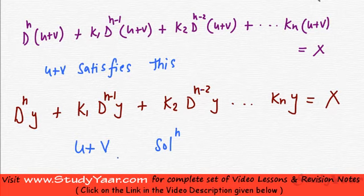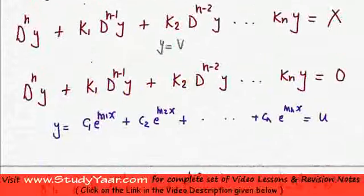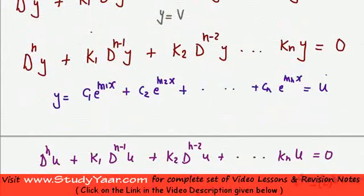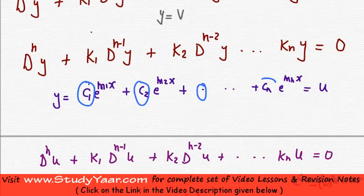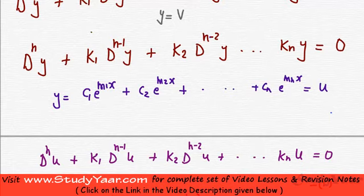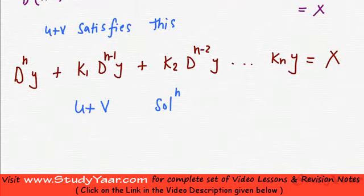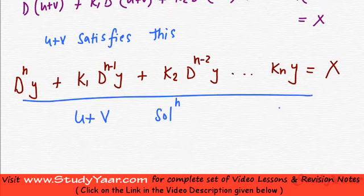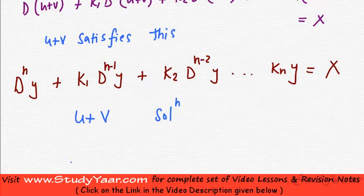Is it a complete solution? It is a complete solution because it is a differential equation of order n and it must have n constants, and u already has n constants. Therefore, the complete solution for a differential equation of this type is u plus v, where u is the complete solution of the homogeneous differential equation.